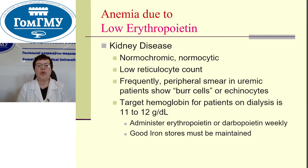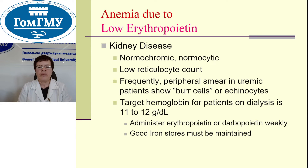Anemia due to low erythropoietin in kidney disease. It is normochromic, normocytic, with low reticulocyte count. Frequently on peripheral smear in uremic patients: burr cells or echinocytes. Target hemoglobin for patients on dialysis is 11 to 12 grams per deciliter. Administer erythropoietin or darbepoetin weekly. Good iron stores must be maintained.